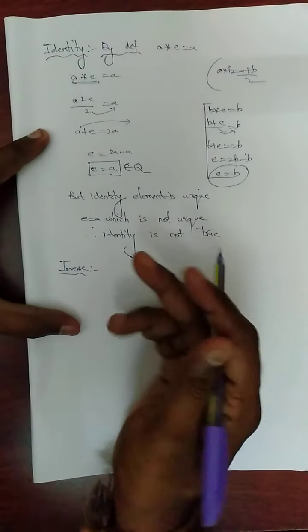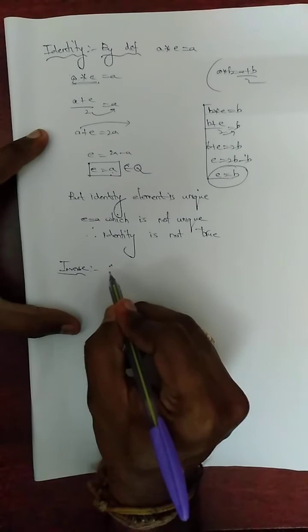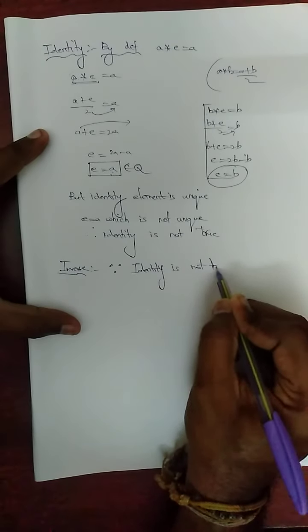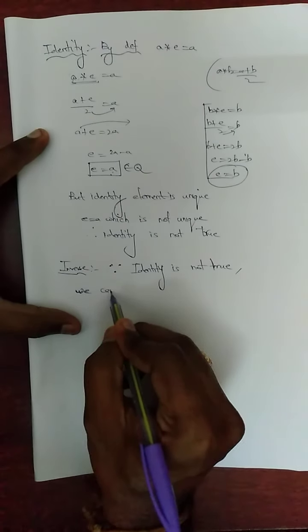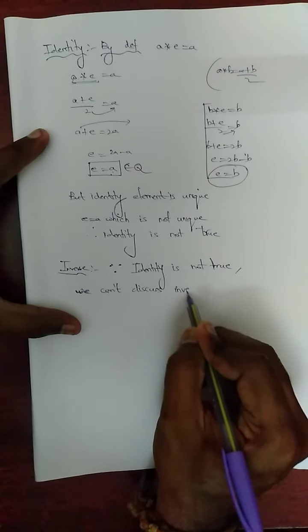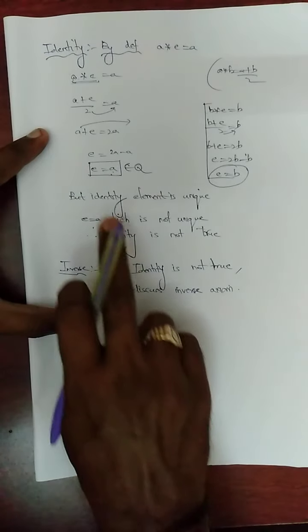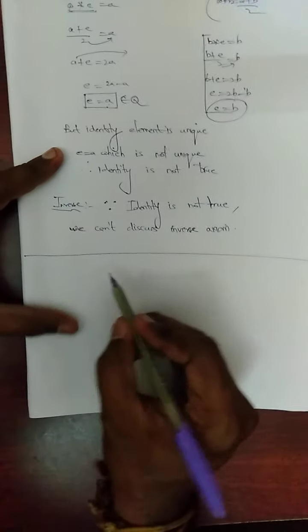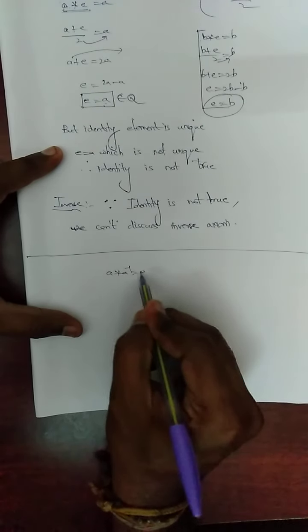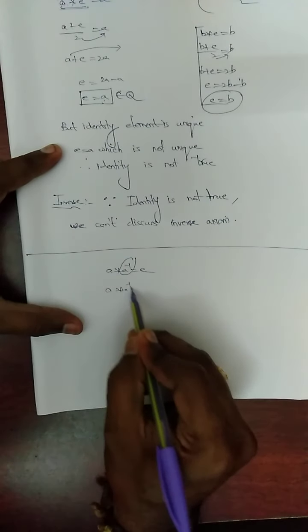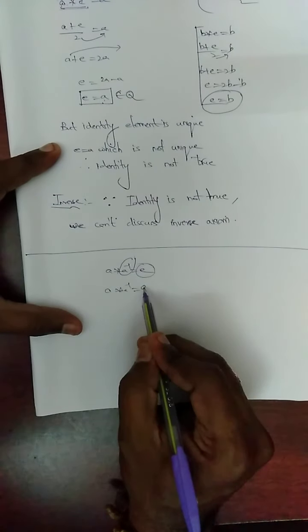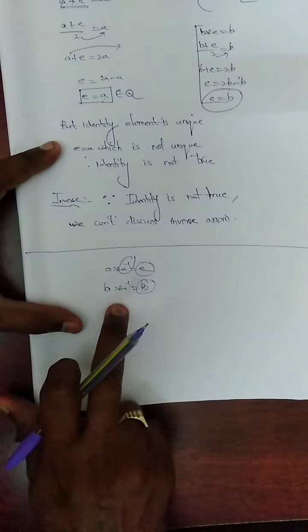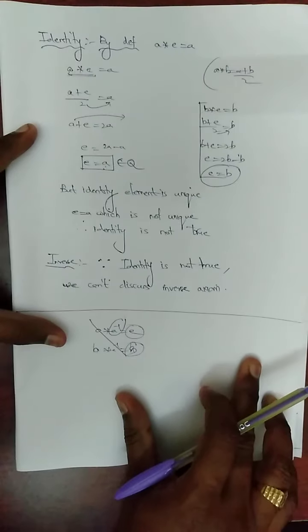For inverse: we can only prove the inverse axiom if the identity axiom is satisfied. Since identity is not true, we cannot discuss the inverse. The inverse requires a★a⁻¹ = e, but since we could not find a unique identity element e, we cannot find the inverse either. Therefore, the sum stops here — inverse cannot be discussed.